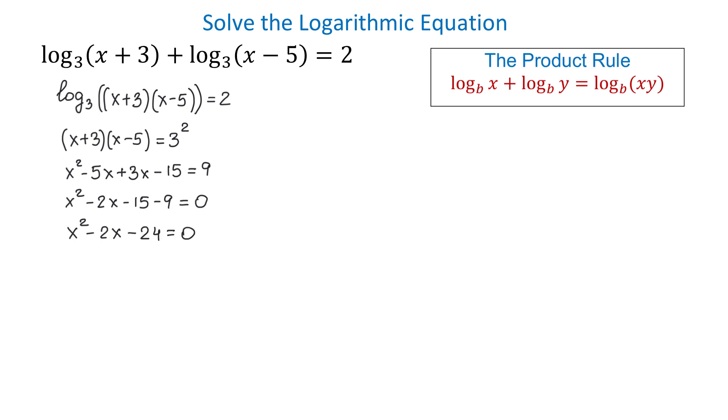Now we have all the terms on one side and 0 on the other side, and this is the form we want to have if we want to solve this equation either by using factoring or by using quadratic formula. First, we will try to use factoring, and if factoring doesn't work, then we can use quadratic formula.